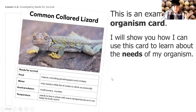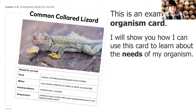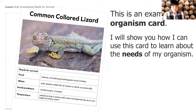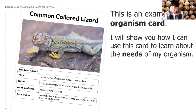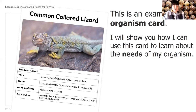We're going to use the common collared lizard as an example to show you how to read through the organism card and what to think about. You're going to look at its needs for survival. What food does it eat? It eats insects including grasshoppers and crickets, so the environment needs to have insects. Water: it only needs a little bit of water to drink occasionally. Avoid predators: its predators are roadrunners and coyotes. Temperature: it needs to live in areas with warm temperature so it can keep its body warm — that's a big factor.